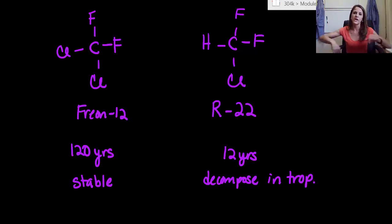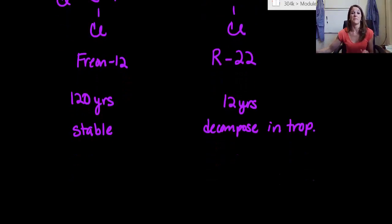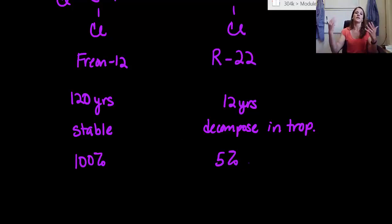So they have a harder time decomposing and creating that radical chlorine which would destroy the ozone. Here's the best part: if we assume that CFCs were worth 100% of our ozone depletion, R-22 only destroys our ozone at 5% of that. So if Freon-12 destroyed 100%, R-22 only destroys 5%.